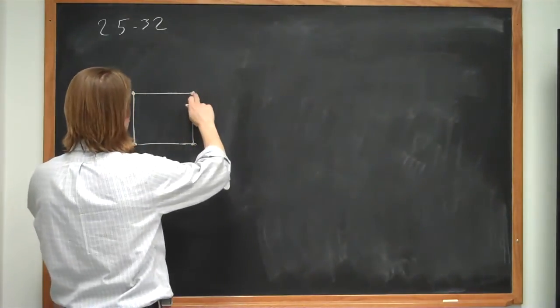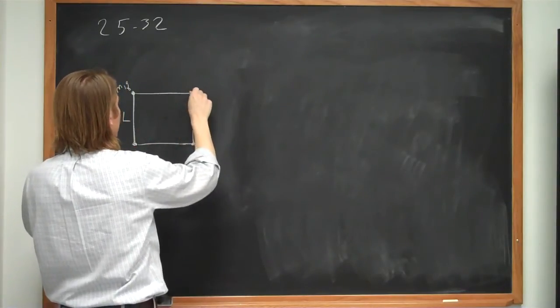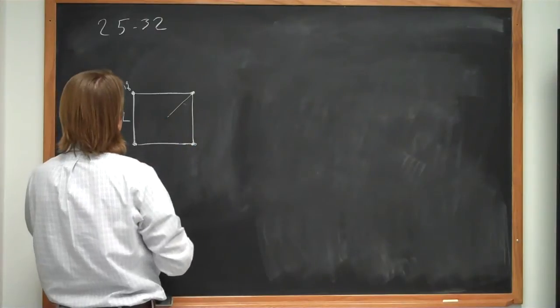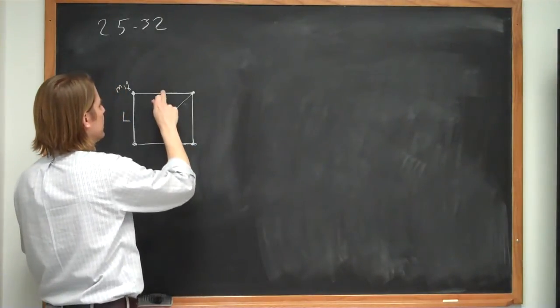And then these charges move out to where they're twice as far from the center. So you could figure out that center is l over the square root of 2. This is l over 2, this is l over 2. My Pythagorean theorem says it's l over the square root of 2.